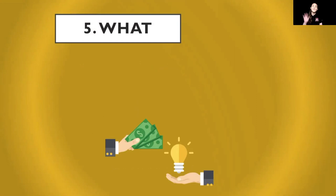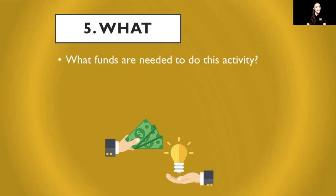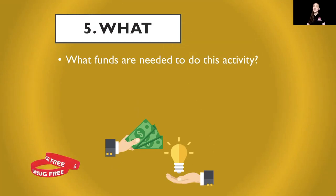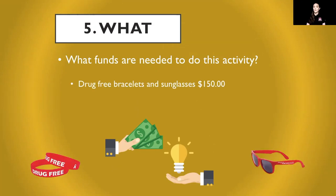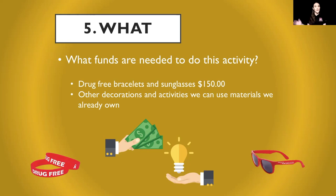The fifth W focuses on 'what funds are needed' to do this activity. For this assembly, since it's focused on drug-free, I'm thinking that we might need to fundraise about $150 to get really cool bracelets and sunglasses. As far as all the other decorations and posters, we can do that using the supplies that are already on school campus.